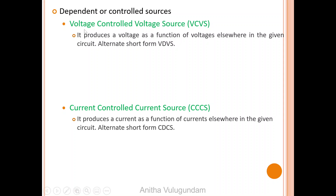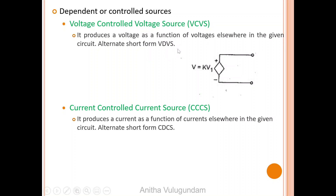Let us talk about dependent sources now. Voltage controlled voltage source: it produces a voltage as a function of voltages elsewhere in the given circuit. Alternate short form is VDVS — that is voltage dependent voltage source.